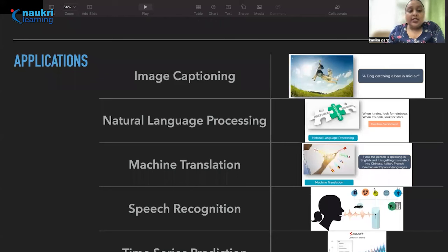The next application it has is in natural language processing because we already know that natural language is a sequence of words that can be processed in a particular sequence only. Text mining and sentiment analysis can be carried out using RNN. And if you can see here in the example, it's an example of sentiment classification. When it rains look for rainbows, when it's dark look for stars. That means it has a positive sentiment and this is done by RNN.